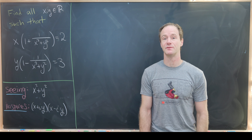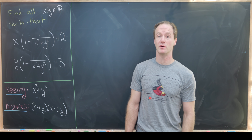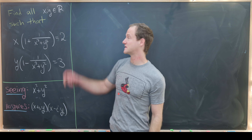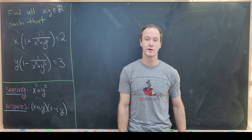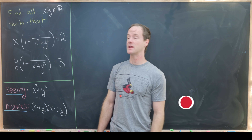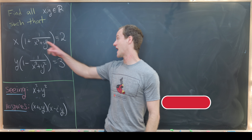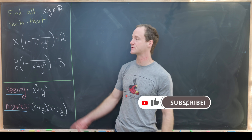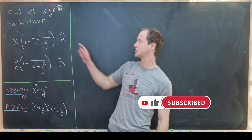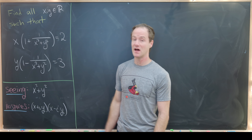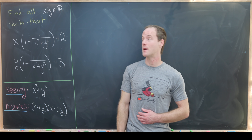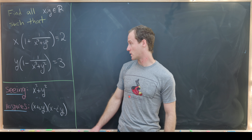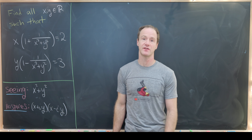Here we're going to solve a nice system of non-linear equations. Our goal is to find all real numbers x and y such that x times (1 plus 1 over x² plus y²) equals 2, and y times (1 minus 1 over x² plus y²) equals 3.